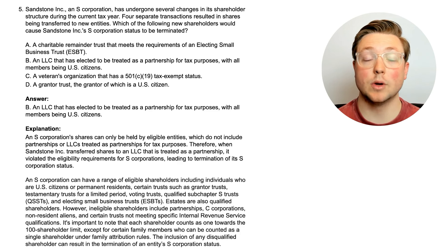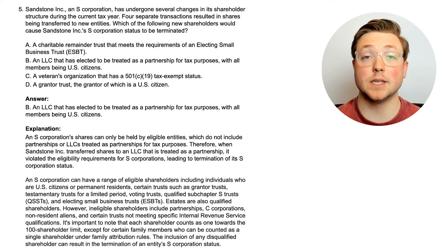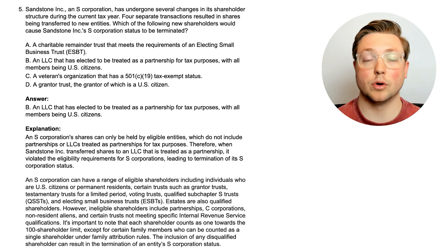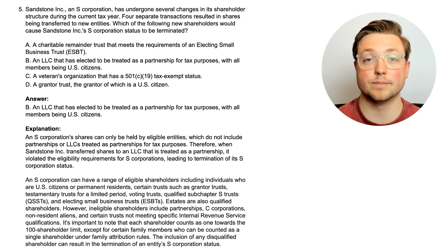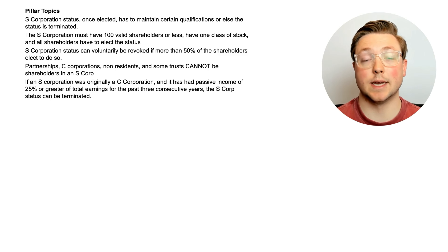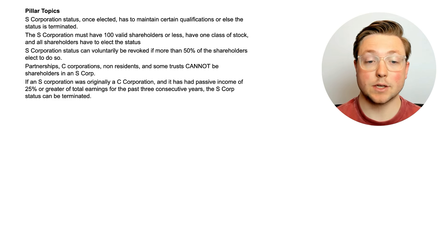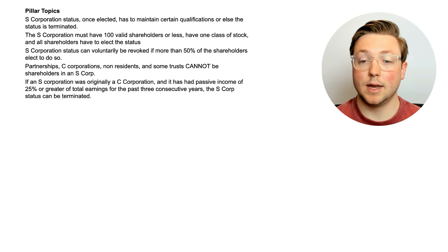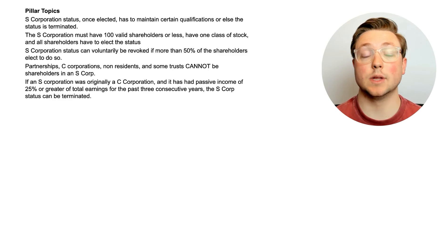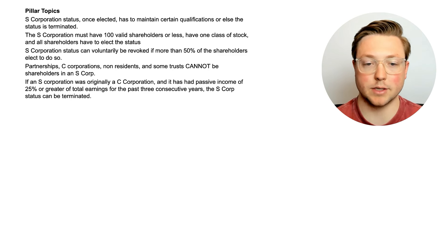Those are the questions for this video. Let's do one more part of the Superfast CPA strategy, which is called pillar topics. As you're going through the questions, you will notice certain things that keep popping up — these are obviously important according to your review course, and these are the things you now know you need to know for the CPA exam. S-corporation status, once elected, has to maintain certain qualifications or else the status is terminated. The S-corporation must have 100 valid shareholders or less, have one class of stock, and all shareholders have to elect the status through the IRS.